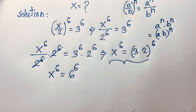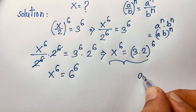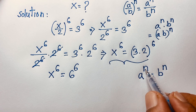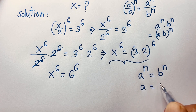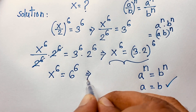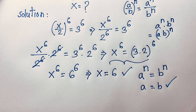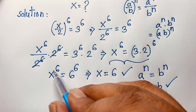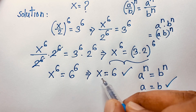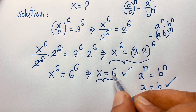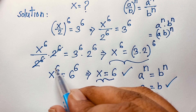Now we know that if a^n = b^n, then a = b. So one real solution is x = 6. However, since the exponent is 6, there are 6 roots total. We will find out all 6 roots — one real root is x = 6, and there are 5 other roots to find.